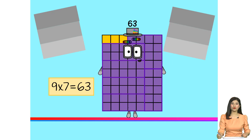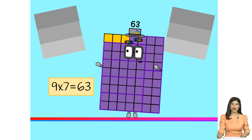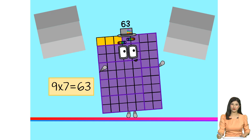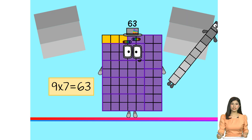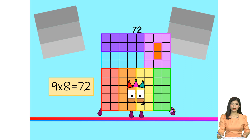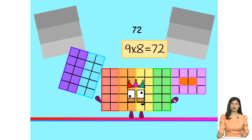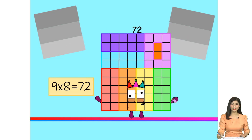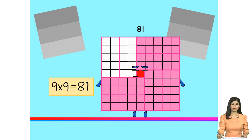9 times 7 are 44, 9 times 4 are 44, 11 times 4 are 44.